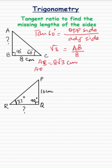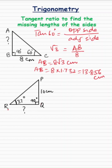If I plug in the value of √3, it will be 8 × 1.732, which equals 13.856 centimeters. That's the value of AB. In my next triangle PQR, angle R is 37° and the opposite side is given, and I need to find the adjacent side.